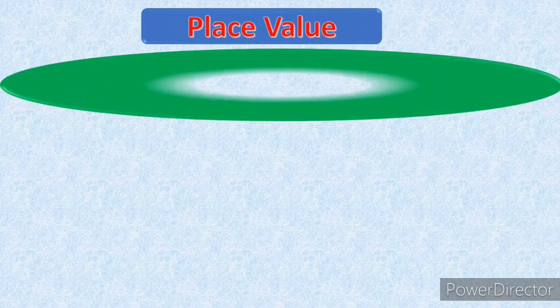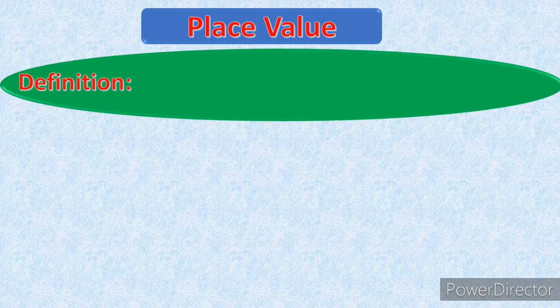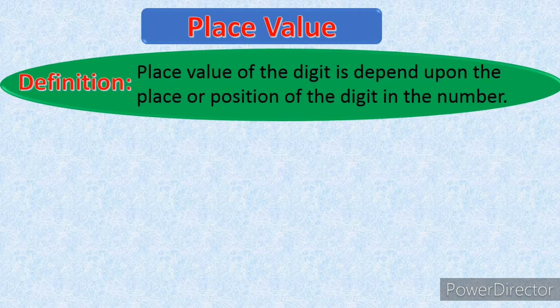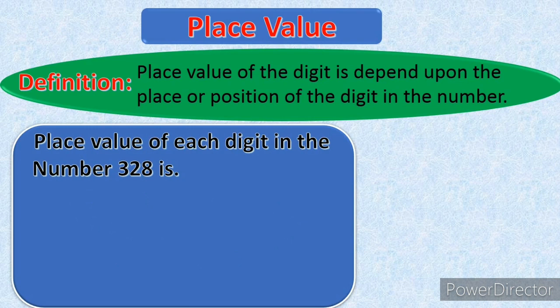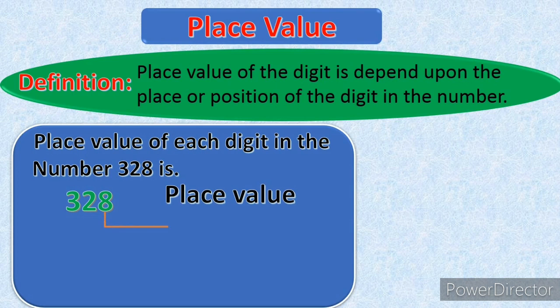Now we will see place value. Here is the definition of place value. Place value of a digit depends upon the place or position of the digit in the number. We will see this through example. The example is: find the place value of each digit in the number 328. Place value of 8 — 8 is at the 1's place, so 8 into 1 equals 8.